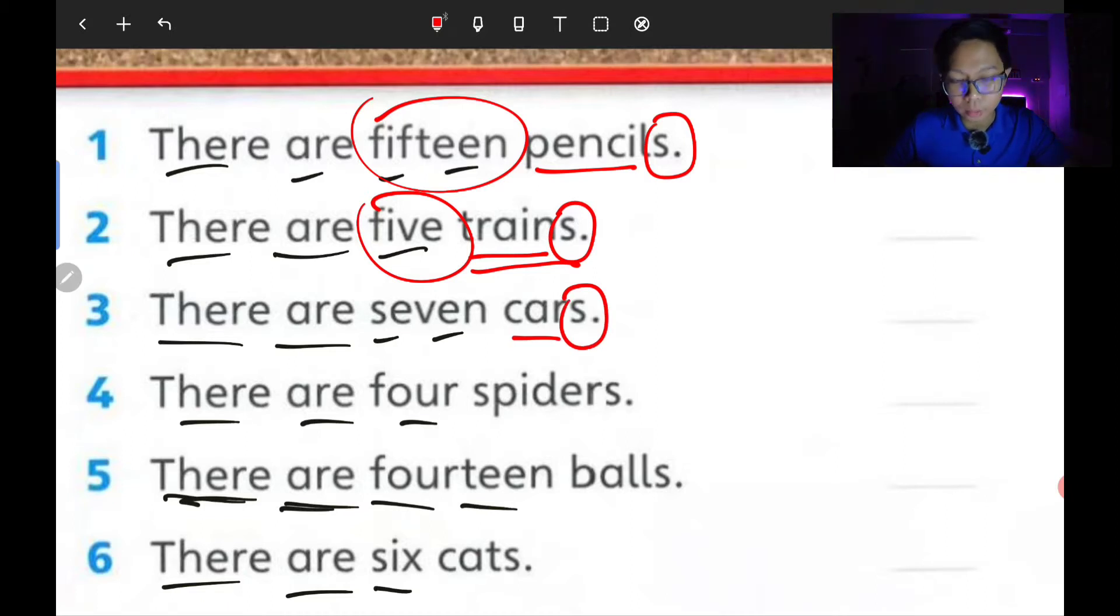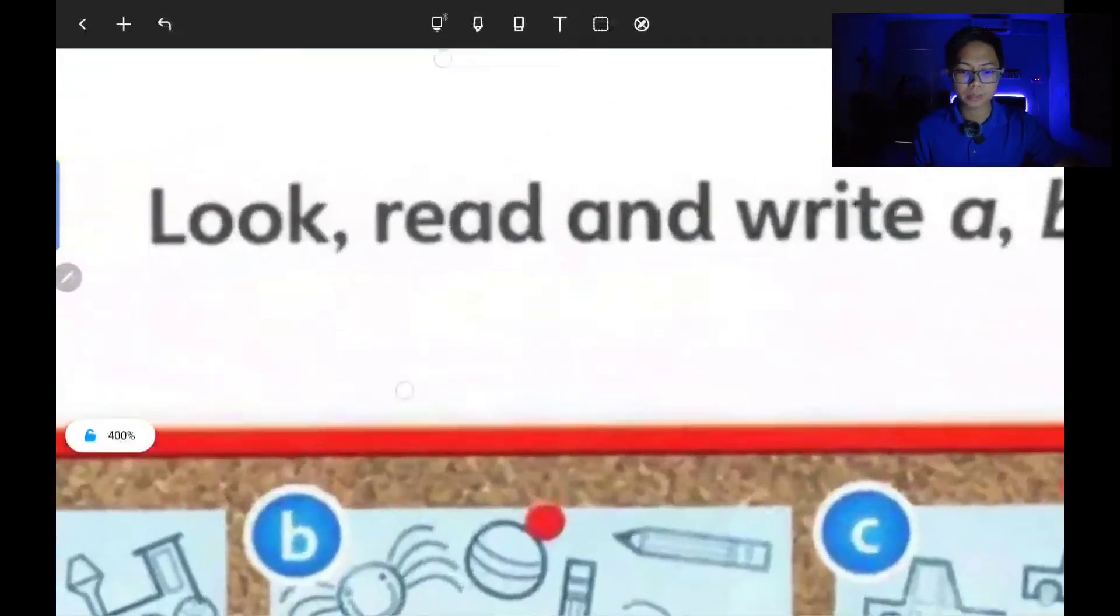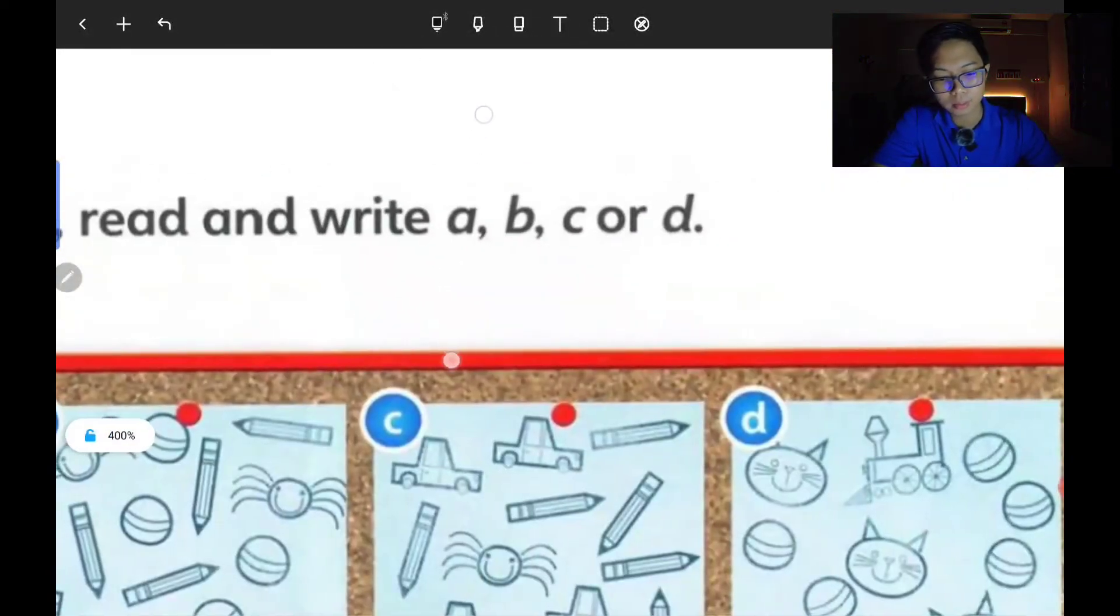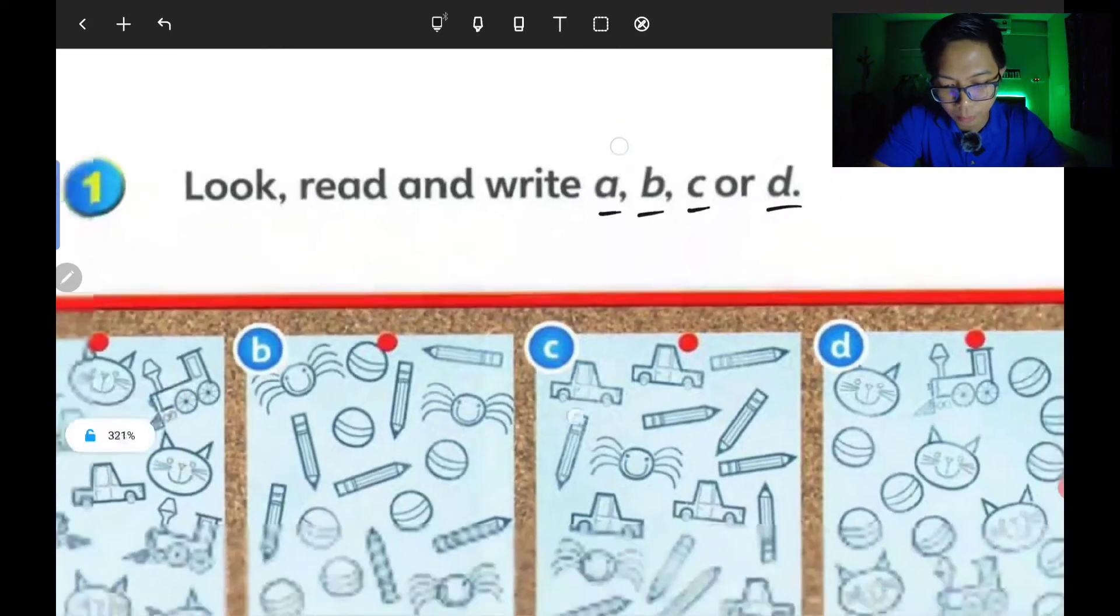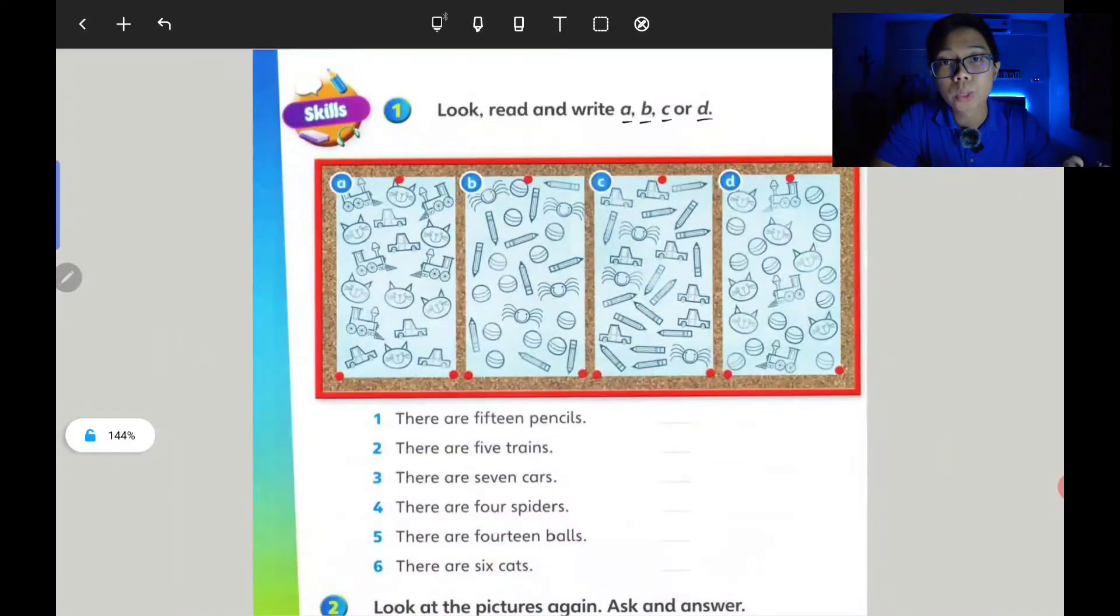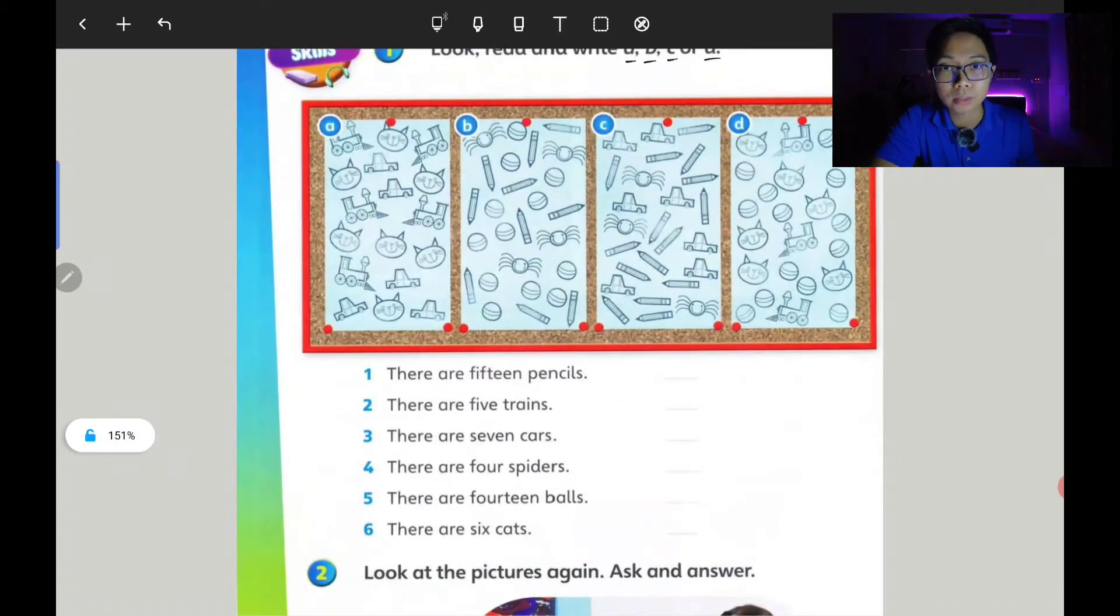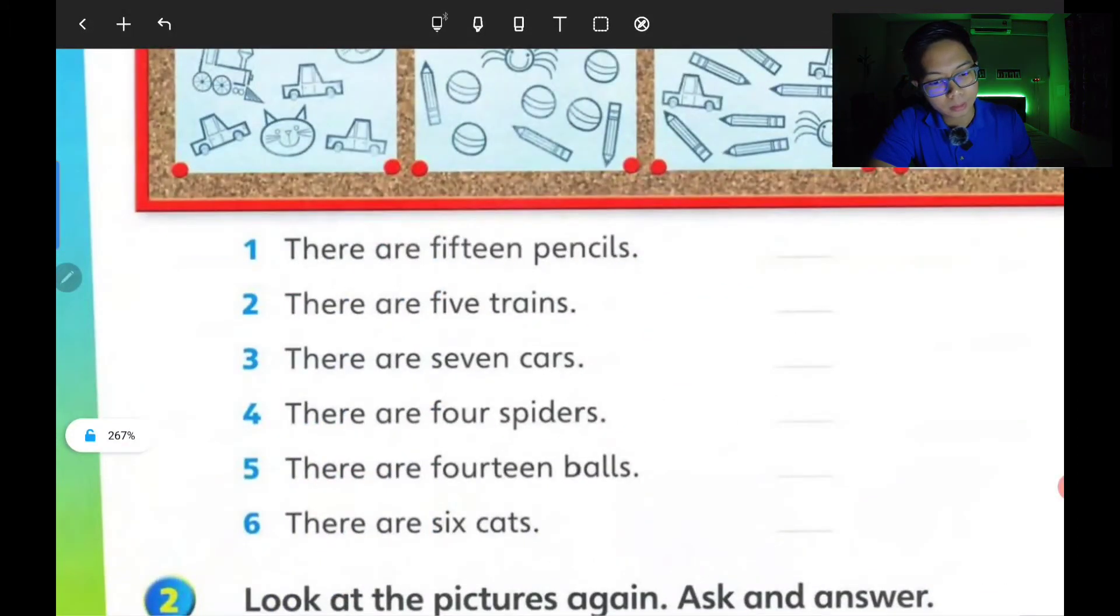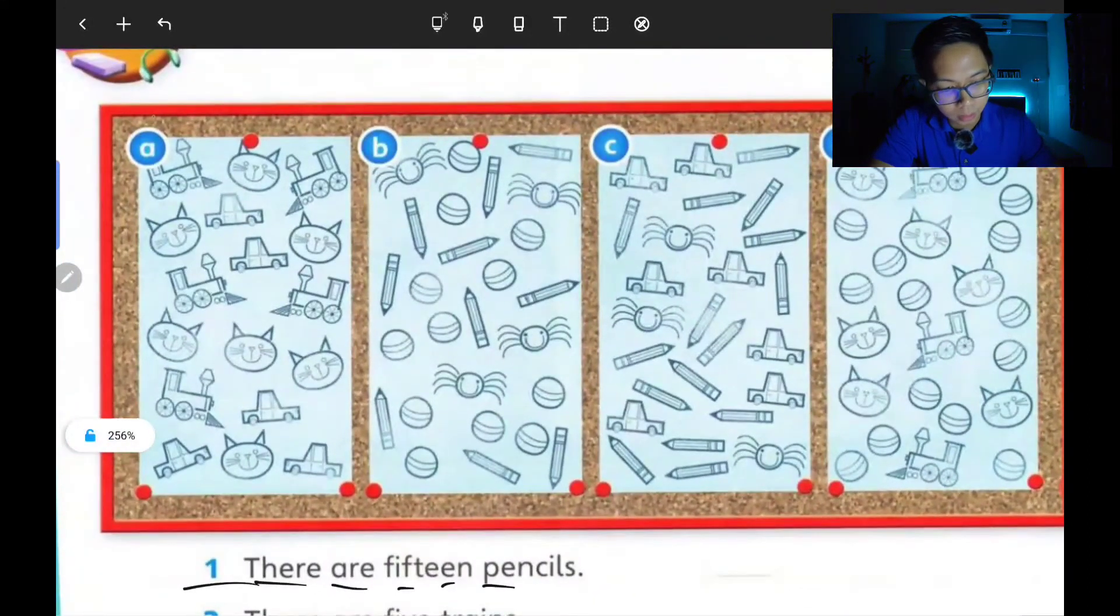Car - only one. We put S behind. Cars means a lot of cars. How many cars? There are seven cars, and so on. So after we have read, we have to write - it's either picture A, B, C, or D. There are four choices. But again, I remind you, do not write on your textbook, especially when you borrowed the textbook, unless you bought the textbook yourself.